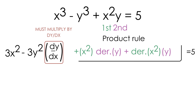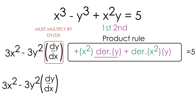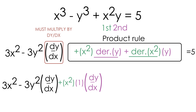Now let's simplify the product rule portion and take the derivative of y. The derivative of y is just 1, and since we took the derivative of a y term we must multiply by dy/dx. Moving to the right, the derivative of x squared is 2x. Then on the right hand side of the equation we take the derivative of the constant 5, and the derivative of any constant is 0.